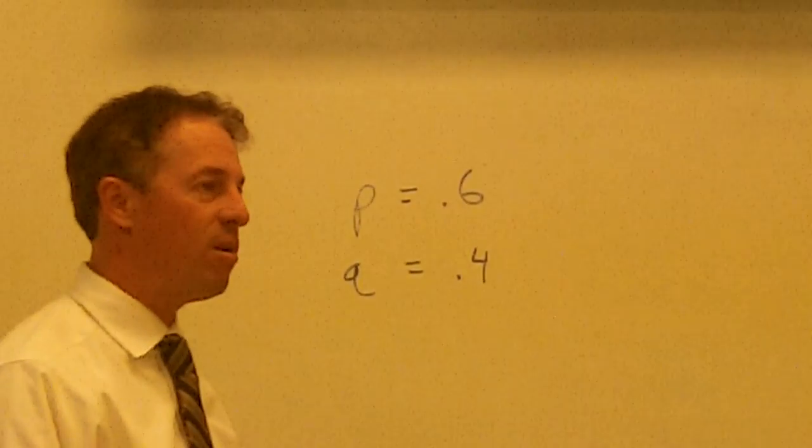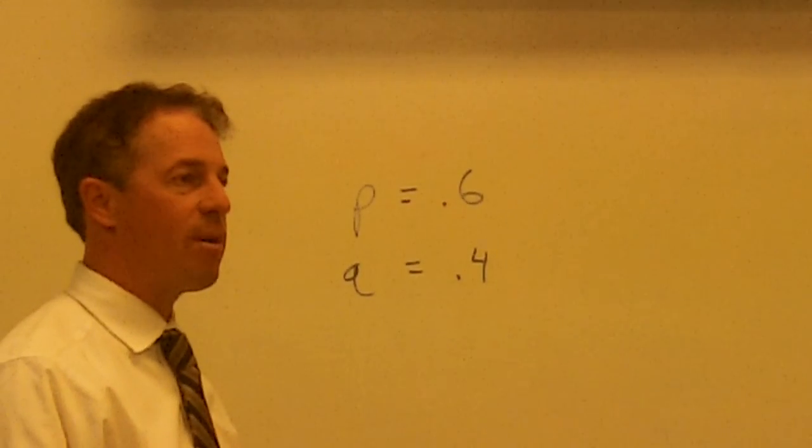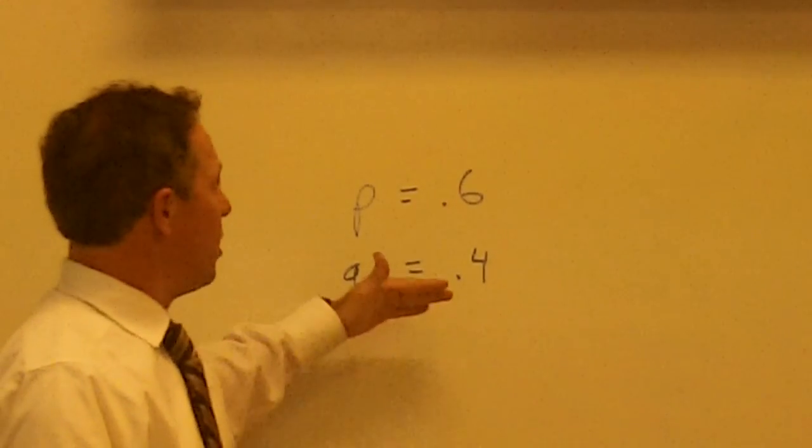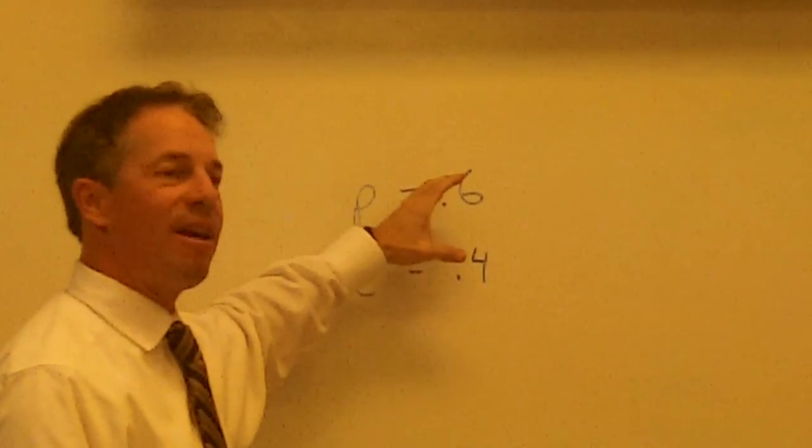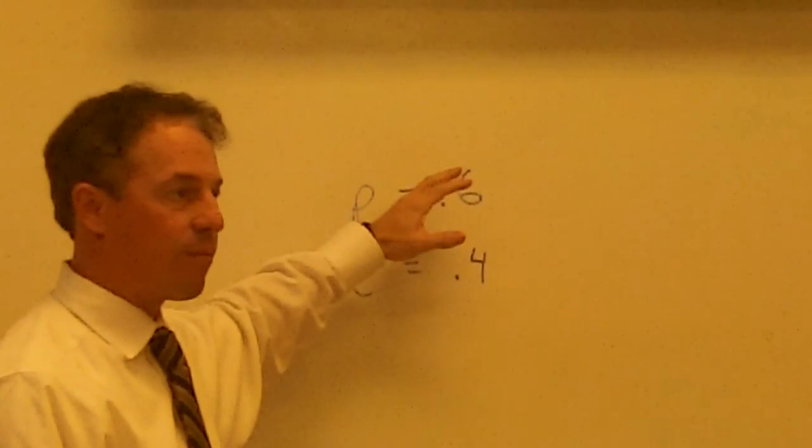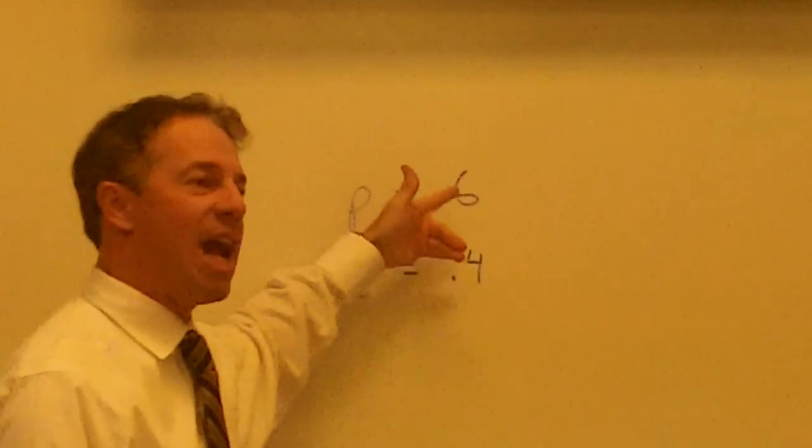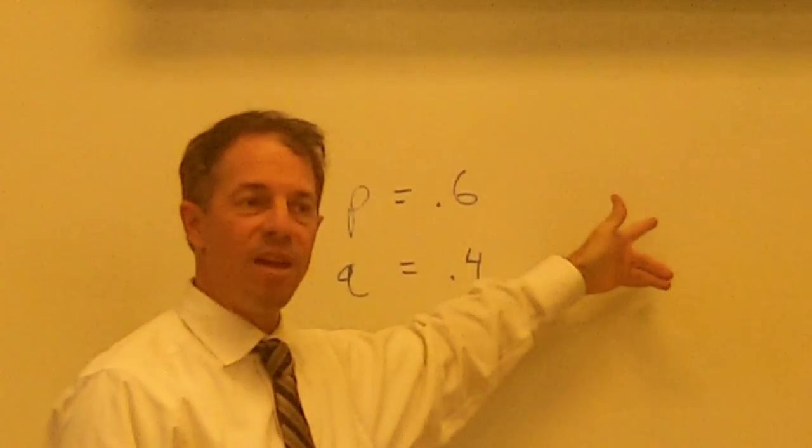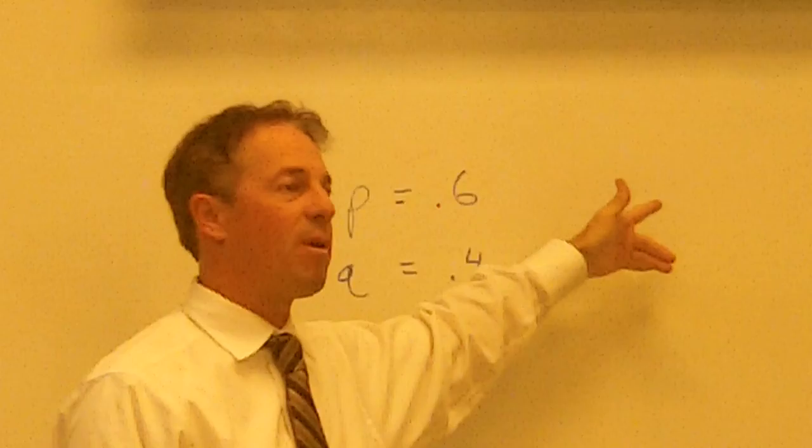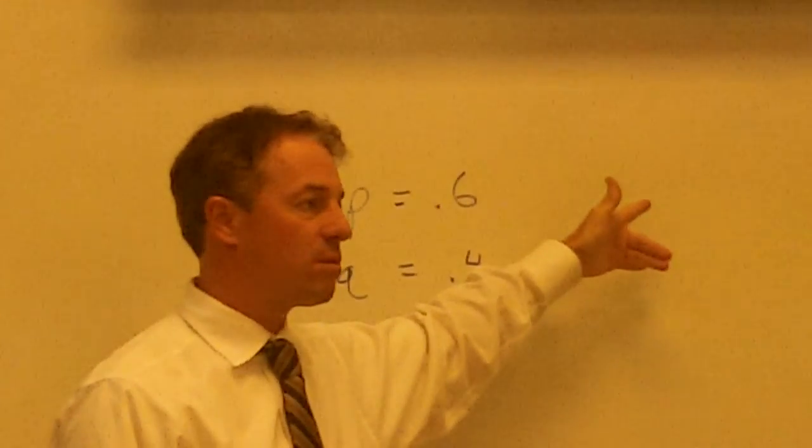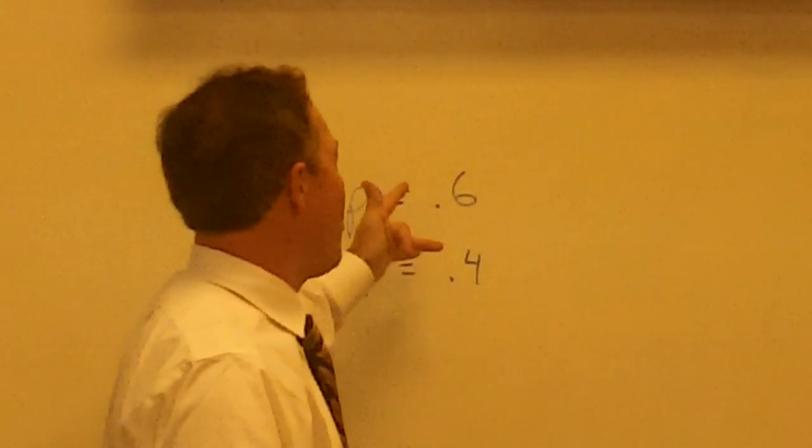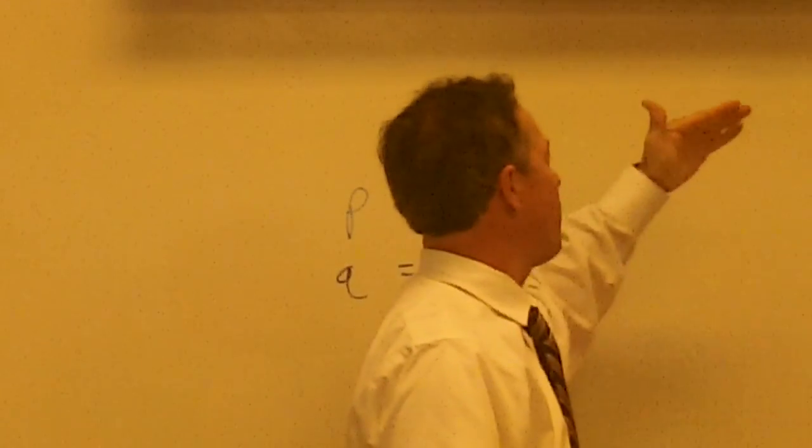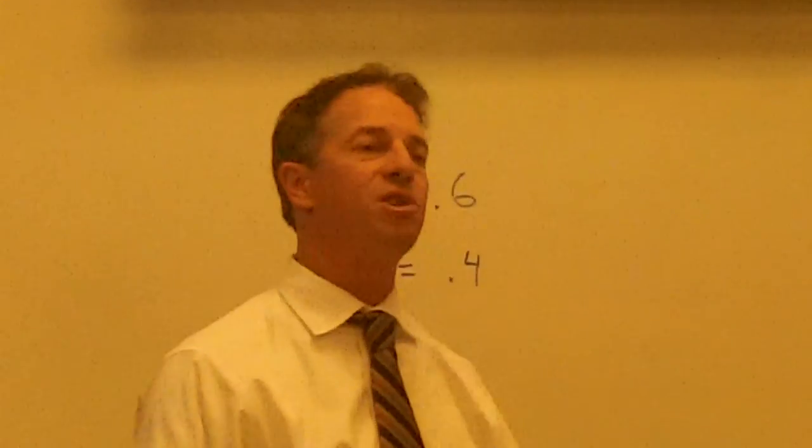Are you all with me here? Some I'm thinking aren't with me. These numbers can tell you a lot about evolution. If these numbers change over time, then evolution is happening in your population. If they're 0.6 and 0.4 right now and you come back 20 years later and they're 0.7 and 0.3, evolution has happened.